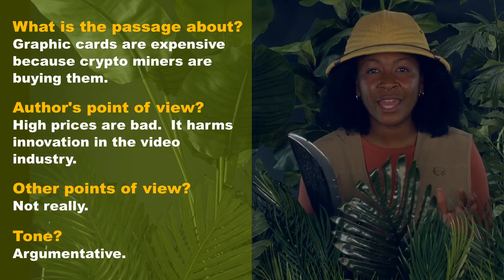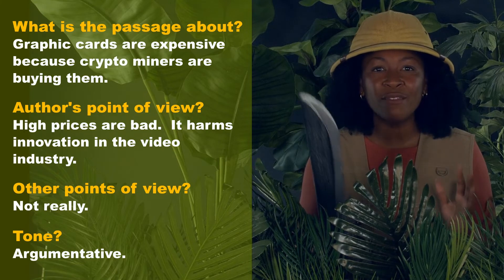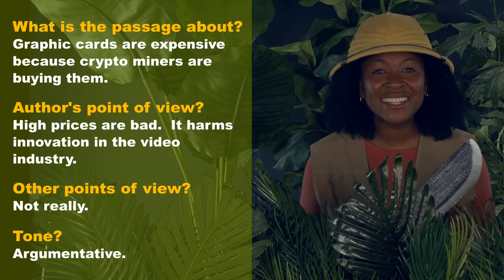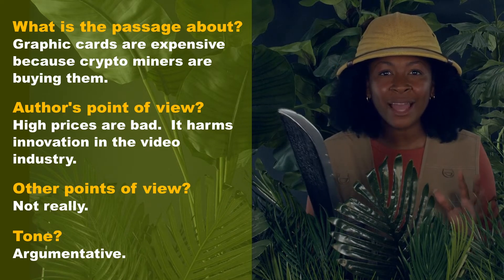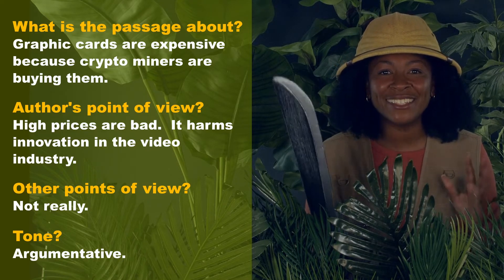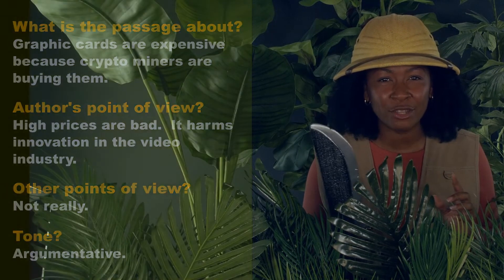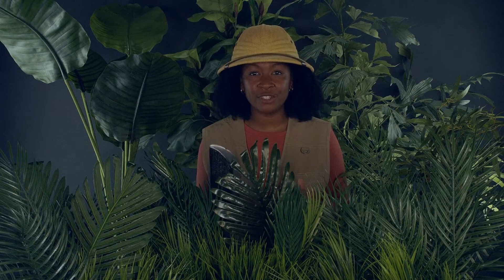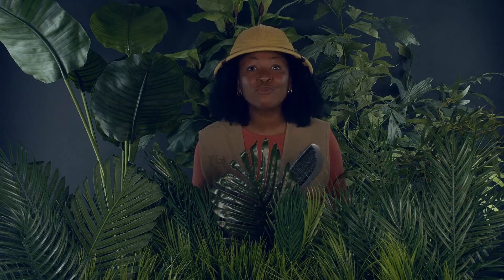The better you get at pulling out the answers to those four questions, the better and faster you'll be at reading comp. It's the essential skill. Those four questions force you to pick out what's important and write it down. Using as few words as possible, get right to the point. When it comes to reading the middle parts of the passage, you should read quickly and pull out just the main points of each paragraph and write it down.